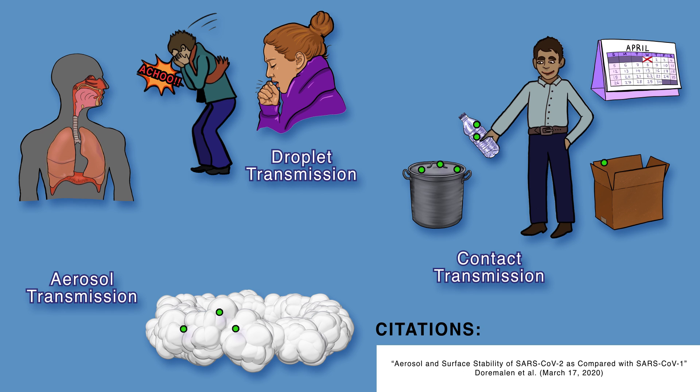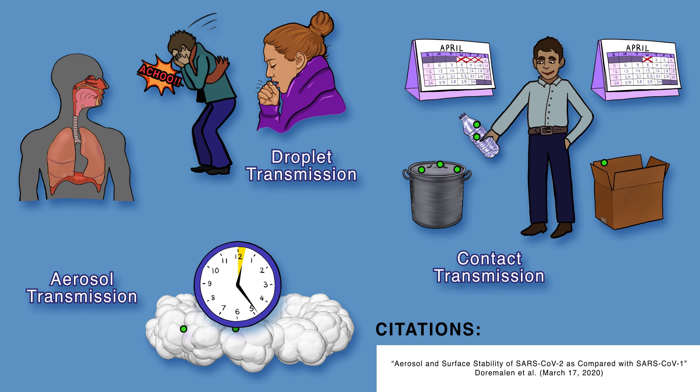COVID-19 is stable for up to 24 hours on cardboard, 2-3 days on plastic and stainless steel, and up to 3 hours in aerosols, which include fog, mist, dust, air pollutants, and smoke. Therefore, it is possible to get infected by touching contaminated objects or through the air.